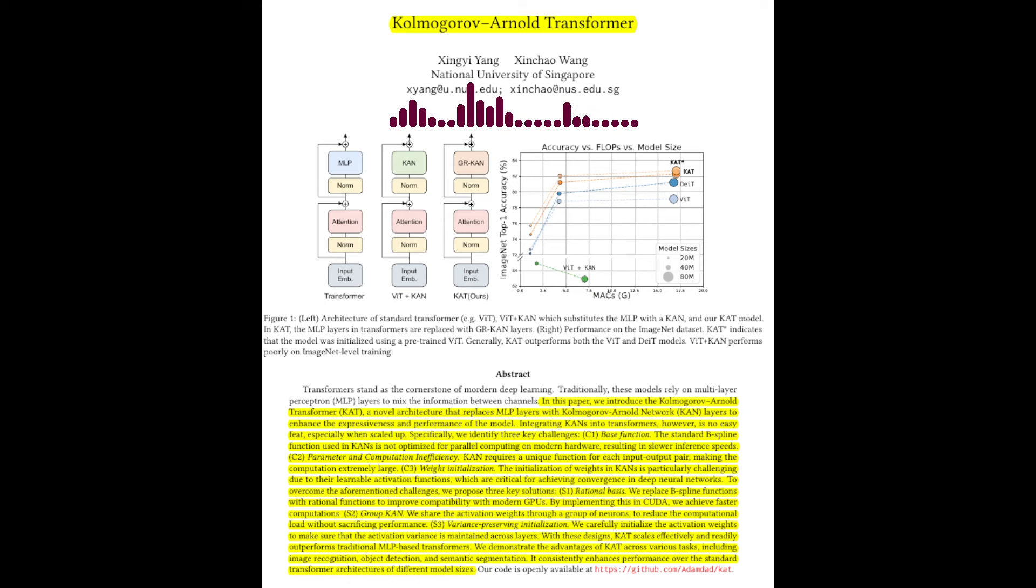The paper proposes three key solutions. First, they replace B-spline functions with rational functions, which are more compatible with modern GPUs and can be implemented efficiently in CUDA.